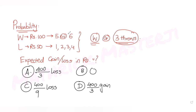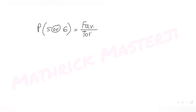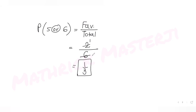Let's figure out which answer choice is correct. First, let's find the probability of getting a five or six when throwing a die. The formula is favorable outcomes over total possible outcomes. When throwing a die, there are six total options. The favorable outcomes — getting a five or six — are two, so the probability of getting five or six is 2/6, which equals 1/3.